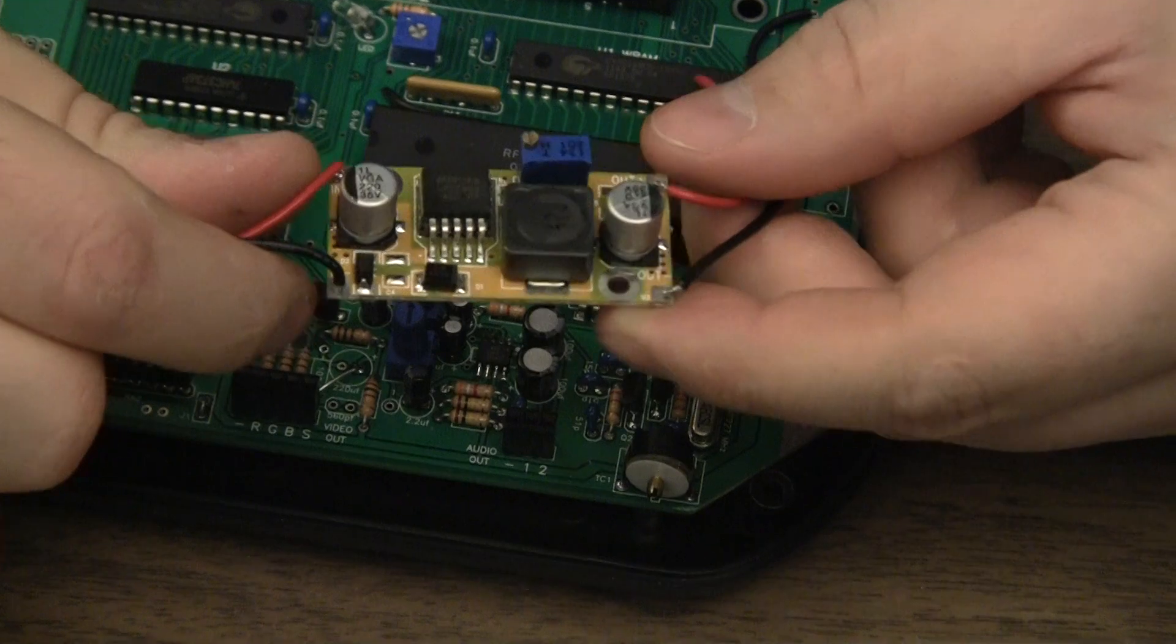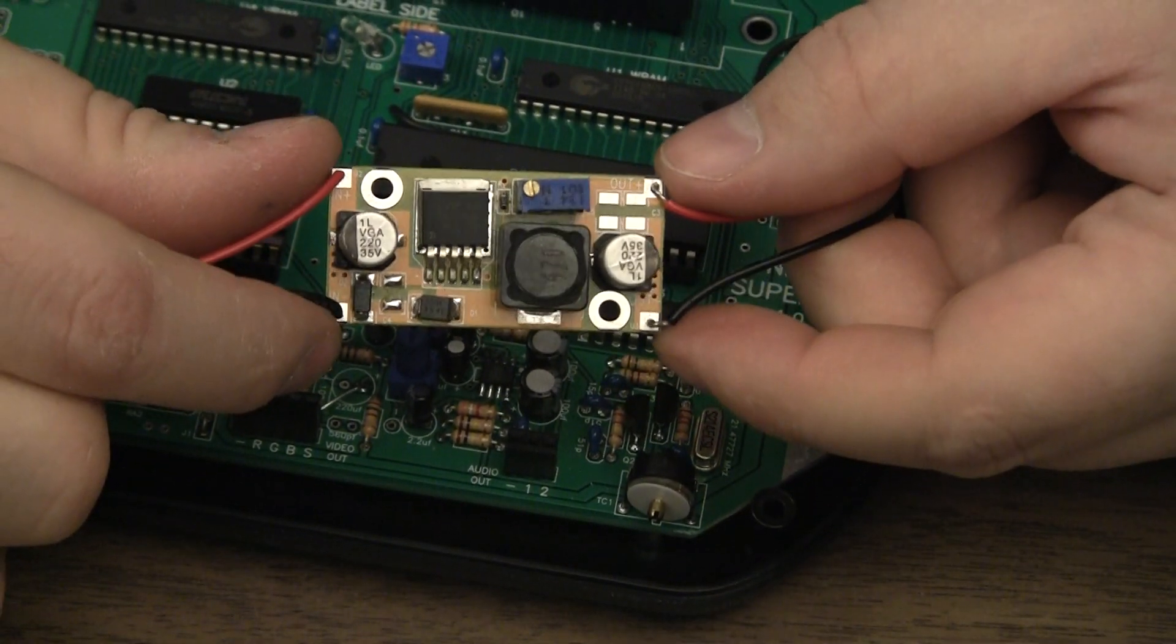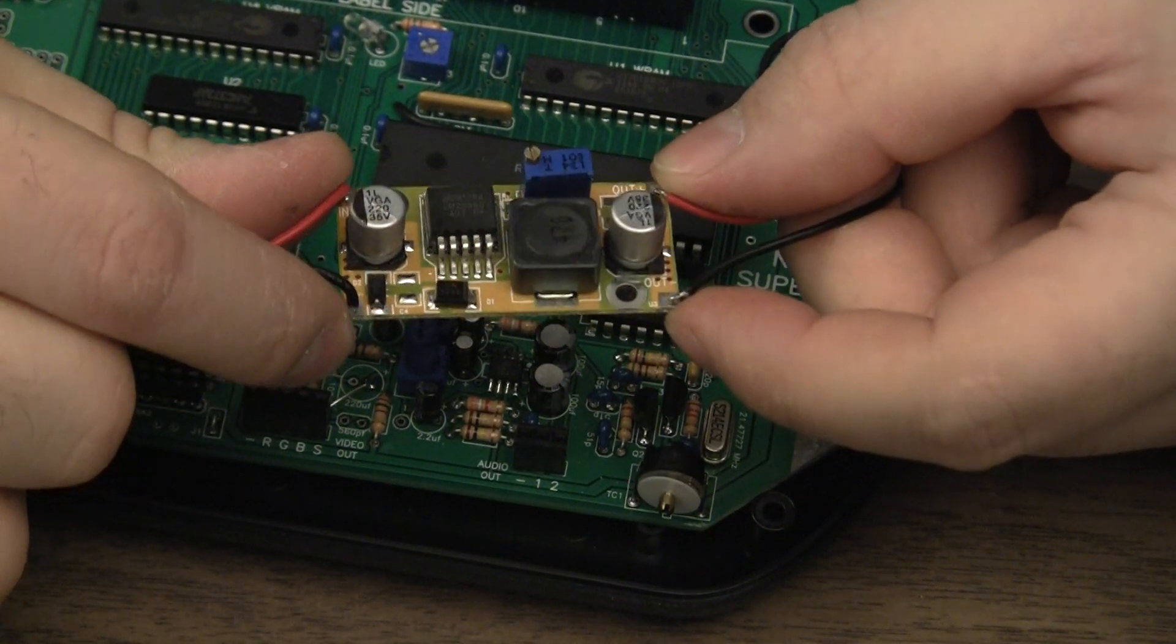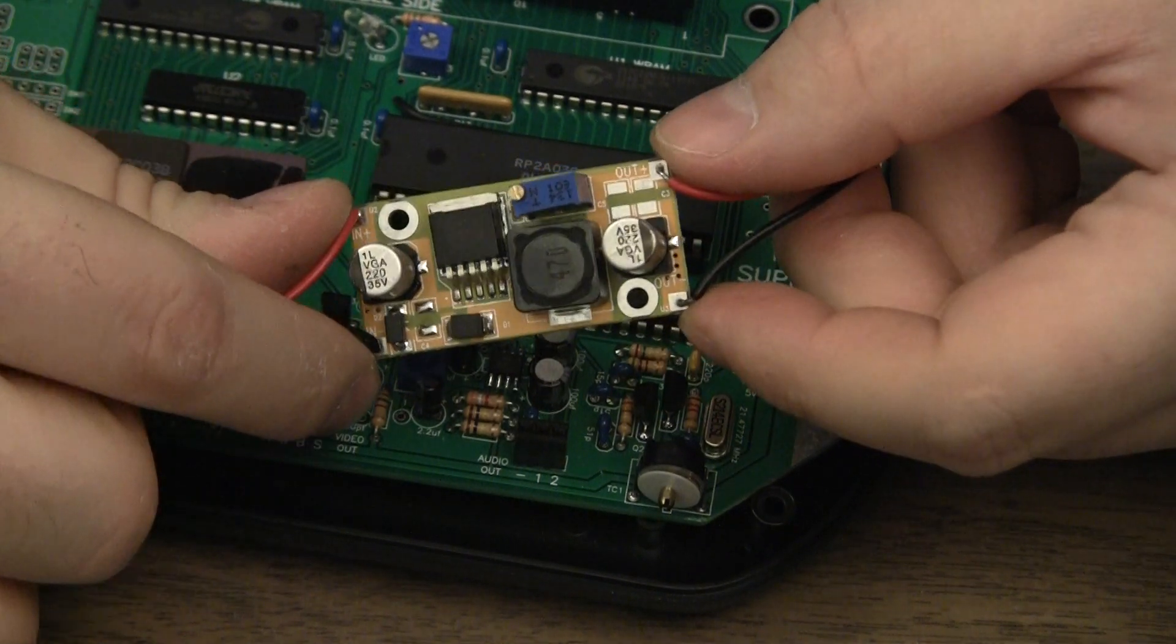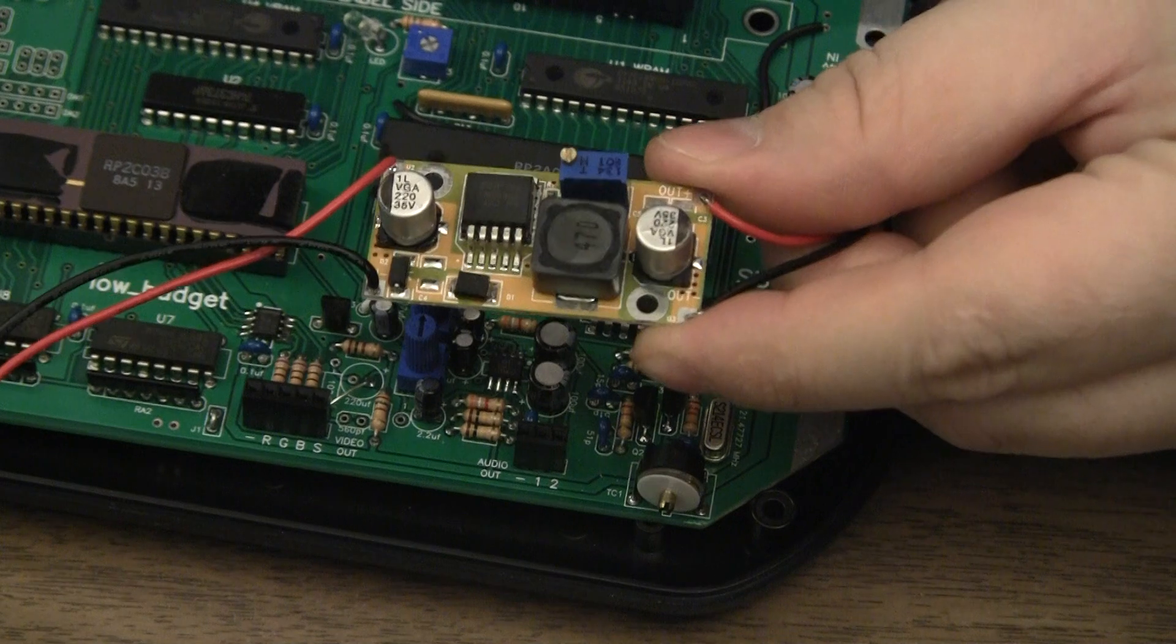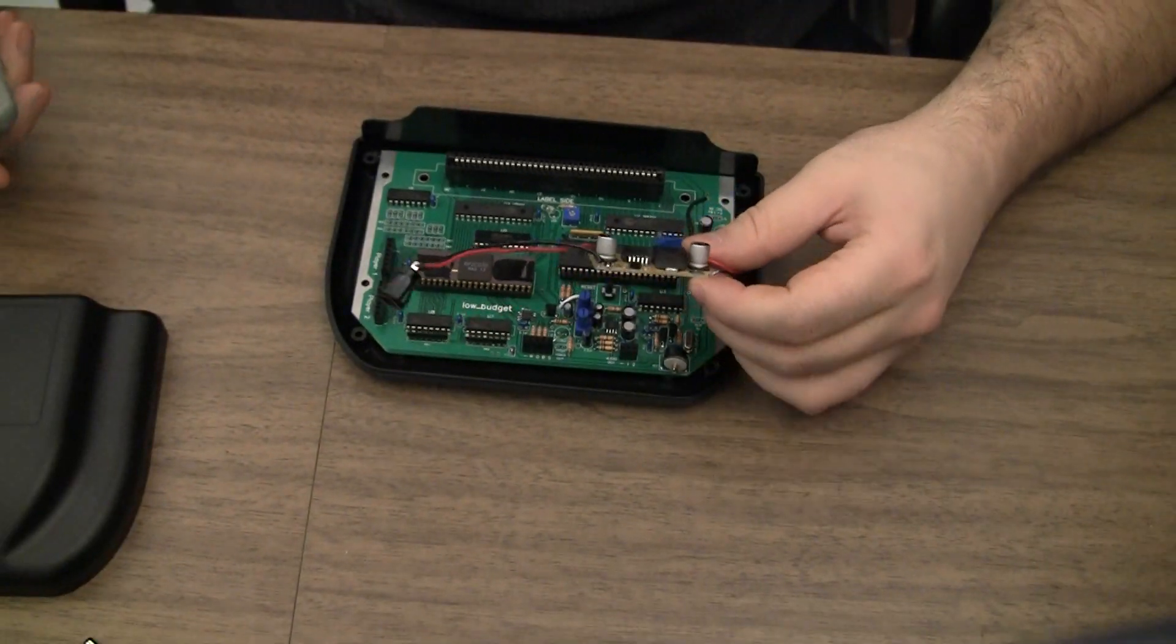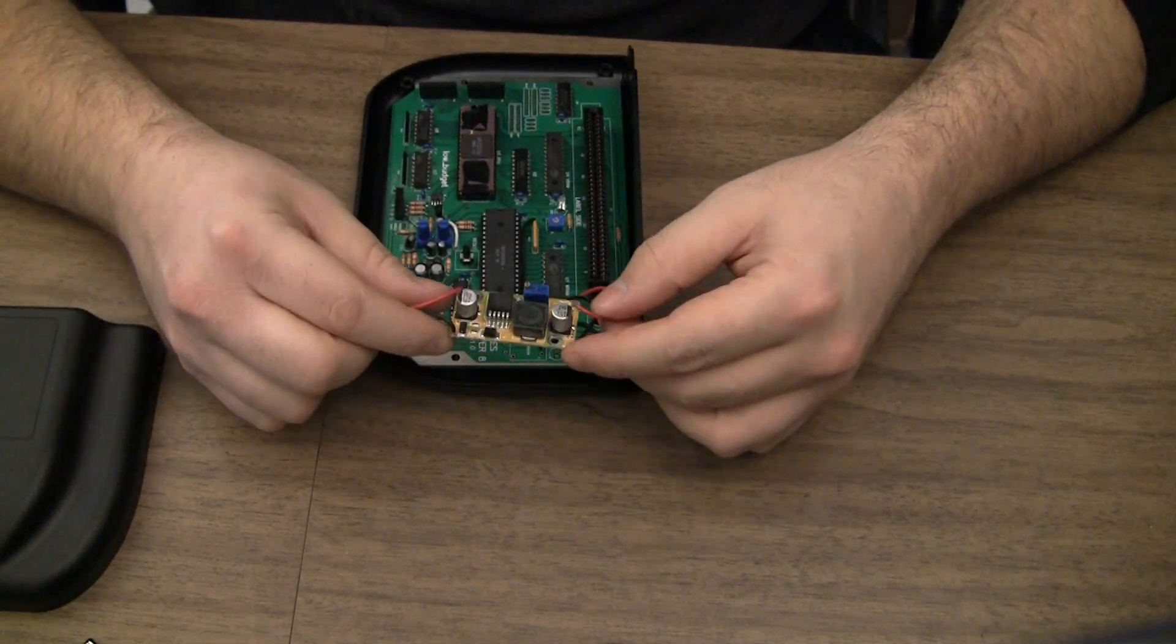I still don't know where this board came from. It's possible that low-budget supplied it to this customer, but I never got any info from him. Now it's outputting a perfect 5 volts, so that part is all set. We'll move on and figure out where to mount this little board.